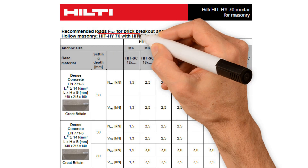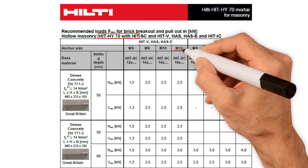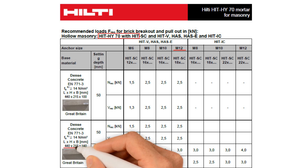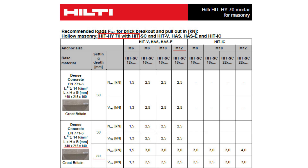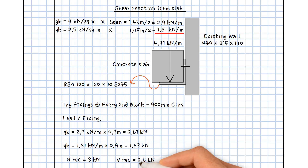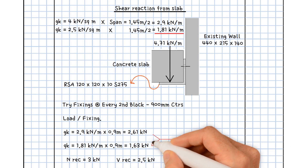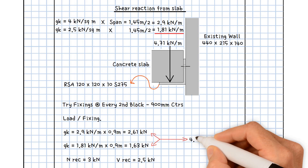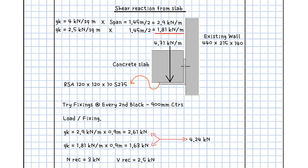Assume we will be using Hilti HIT HY70 masonry mortar with M12 anchors and an 80 mm setting depth. According to the Hilti Fastening Technology Manual, the recommended loads for dense concrete blocks 440 by 215 by 140 are 3 kN for tension capacity and 2.5 kN for shear capacity. The shear capacity of 2.5 kN is clearly less than the total shear of 2.61 plus 1.63, which equals 4.24 kN. As a result, fixings at 900 mm centres are insufficient.